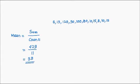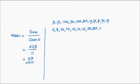To find the median and mode, let's organize the data in ascending order. So, the data in ascending order is 6, 8, 10, 10, 15, 15, 15, 50, 80, 100, 120.